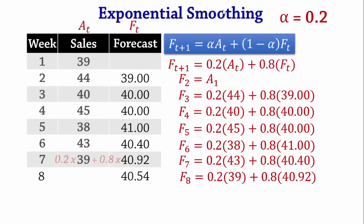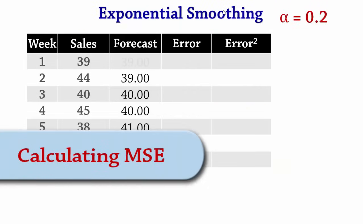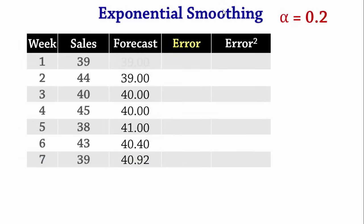Next, we compute the mean squared error. To obtain the MSE, we first obtain the forecast errors, square them, and then find the mean of the squared errors.